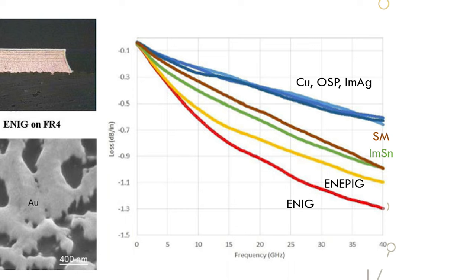Interestingly solder mask produces about the same level of loss as immersion tin and you can see that here with this green curve. And then once you get to the nickel containing plating materials like ENEPIG and ENIG then you start to see really significant losses and then you can see here that they approach about a one dB per unit length difference. This is one dB per inch difference between ENIG and some of these lower loss platings.